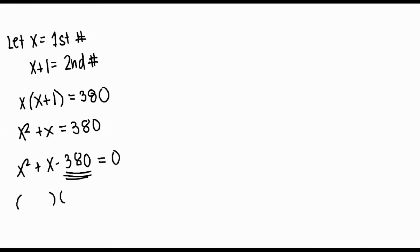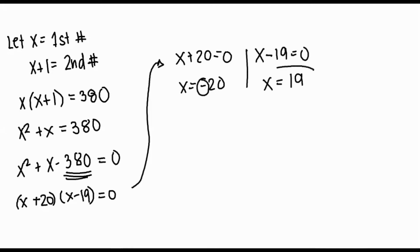Let's find the factors of 380, which will be x plus 20 times x minus 19. So now we have x plus 20 is equal to 0 and x minus 19 is equal to 0, which will give us x equal to negative 20 and x equal to 19. Take note that pages are never negative so we take x is equal to 19 or the positive 1.